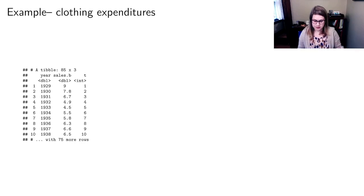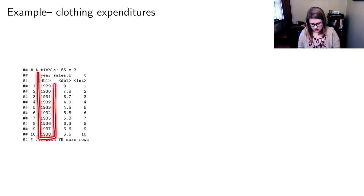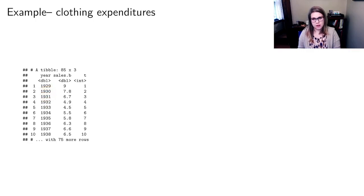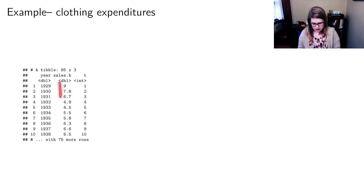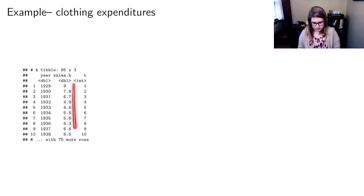In this lecture I'm going to be using lots of examples. One of them is about clothing expenditures. It has data about the year — 1929, 1930, 1931 — and then the sales of clothing in billions of dollars: $9 billion, $7.8 billion, $6.7 billion, and so on. We can think of this as a time series, where the sales numbers are a series of values collected at time points.